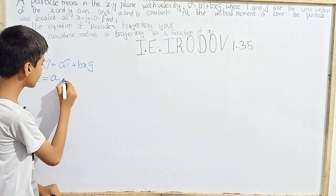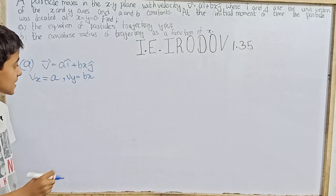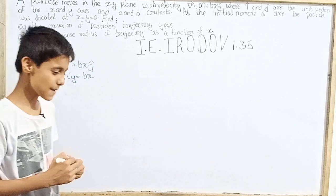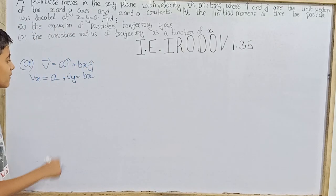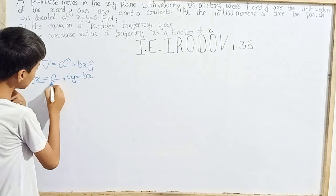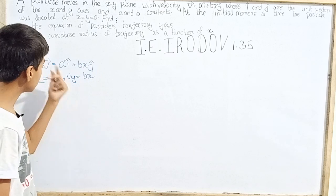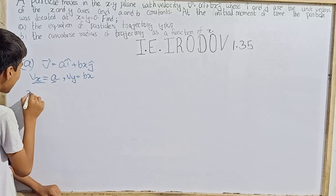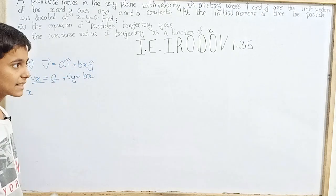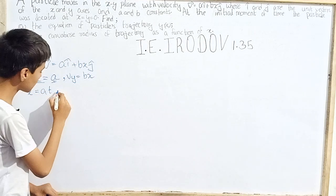The x-component of velocity is a, which is constant, while the y-component of velocity is bx, which varies since x is varying. Because vx is constant and equals a, the position along x at some time t is simply x equals a·t.